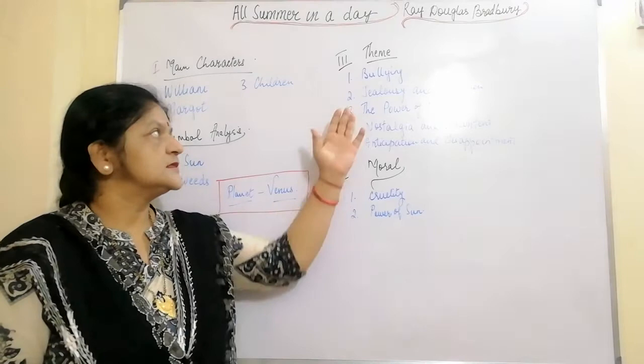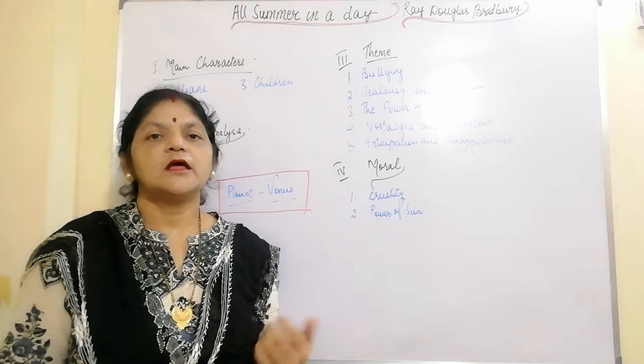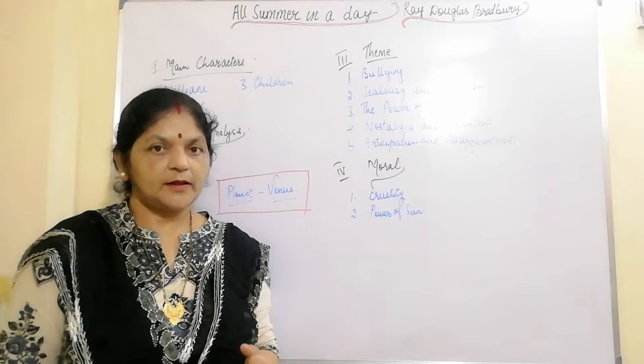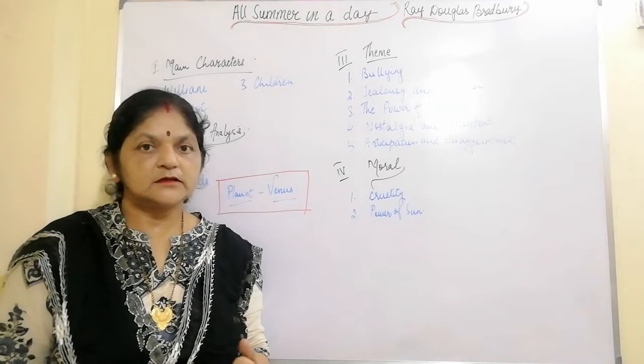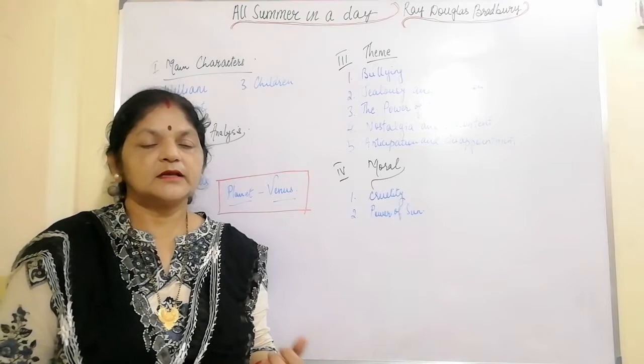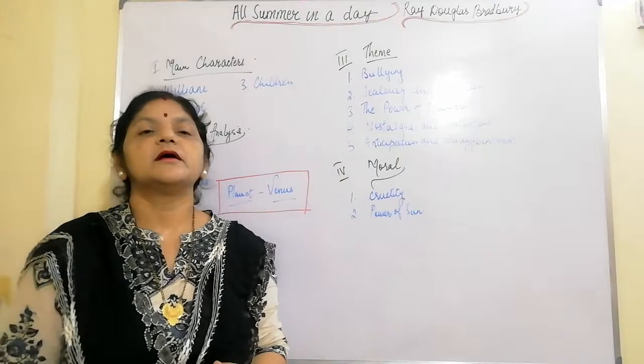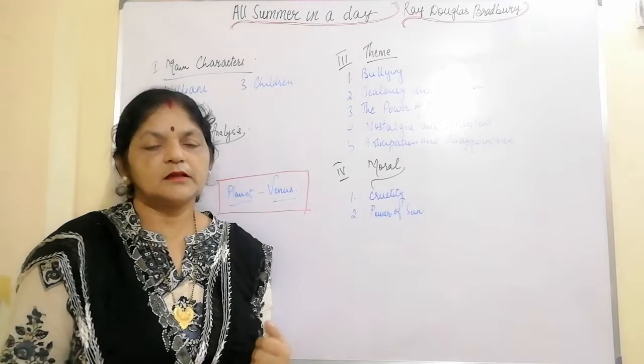Jealousy and isolation: the story tells of a group of children who are jealous of Margaret's experience of sunlight, as she spent her childhood on Earth. Her recollections are most true to life. The story shows that even extremely cruel bullying is driven by more complicated motives than hatred alone. Number three, the power of nature: the story imagines a world in which humans have left Earth for Venus, an inhospitable planet, where they must live completely indoors and can only dream about the pleasure of being outside.